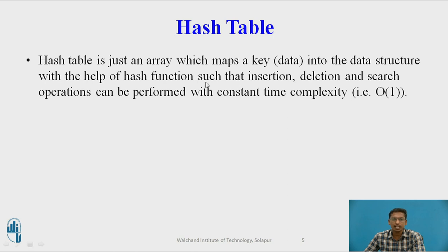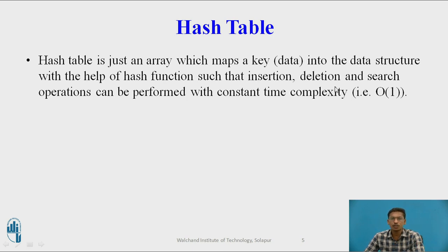What is a hash table? Hash table is just an array which maps input data to the data structure with the help of a hash function, such that insertion, deletion, and search should be performed with O(1) time. O(1) time means there is only one comparison required for searching an element from the given data structure.